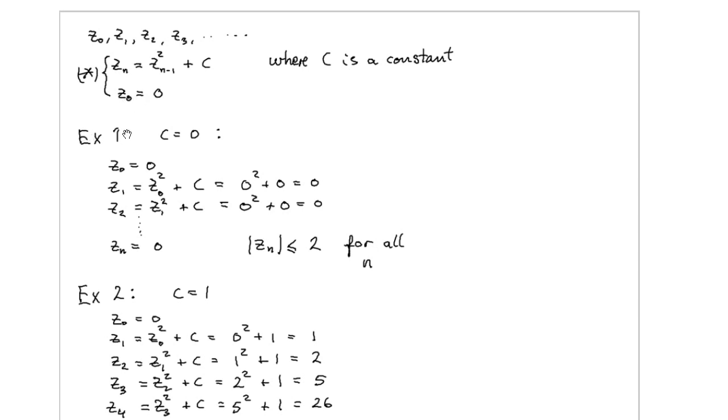Let's just take an example. If C is equal to 0, what do we get then? We start with z_0, and by this rule the second element is the first element squared plus the constant C, which is 0. So we have 0 squared plus 0, and this is 0.